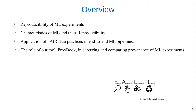We investigate which factors, beyond the availability of source code and data sets, influence reproducibility of machine learning experiments. We propose the application of fair data practices in end-to-end machine learning pipelines. We present our preliminary results on the role of a tool, ProveBook, in capturing and comparing provenance of machine learning experiments and their reproducibility using Jupyter Notebooks.